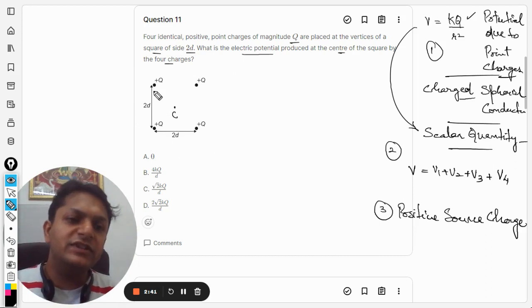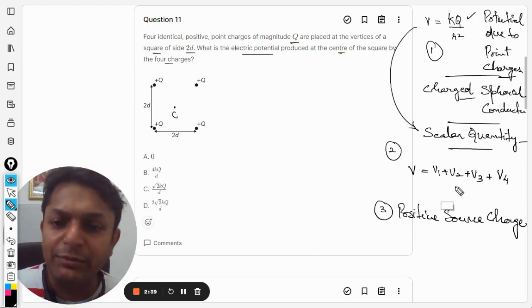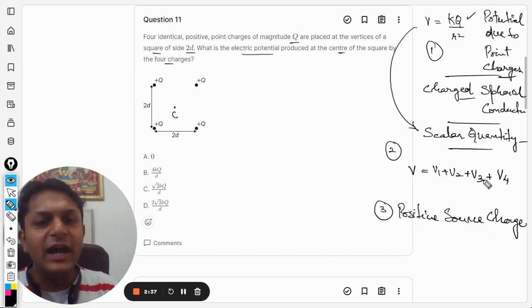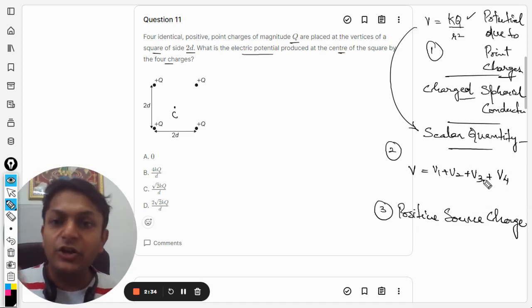And obviously when we are going to add them in a simple manner, they will just add up and it will become a bigger value. That's it. And no negative charge, it means that no potential is going to be subtracted.